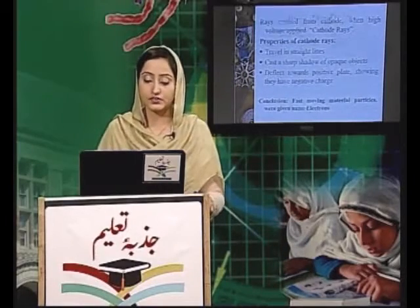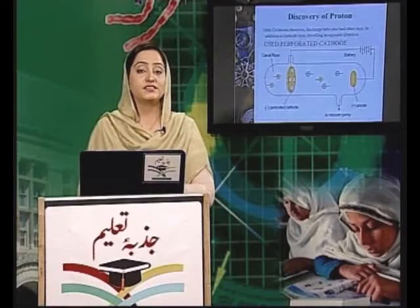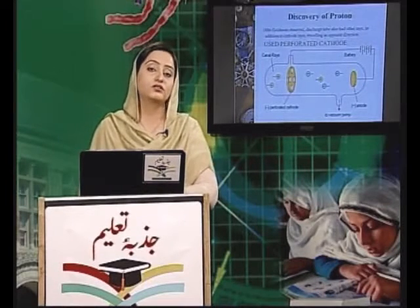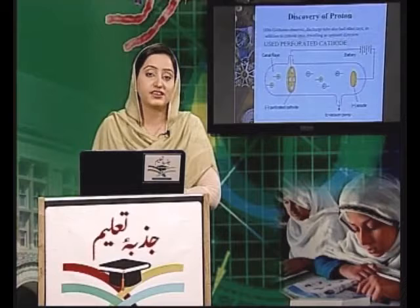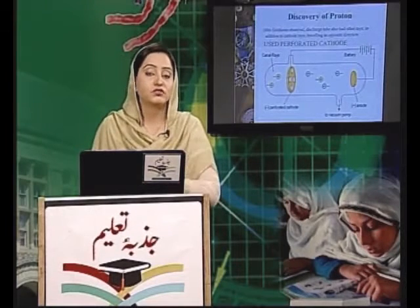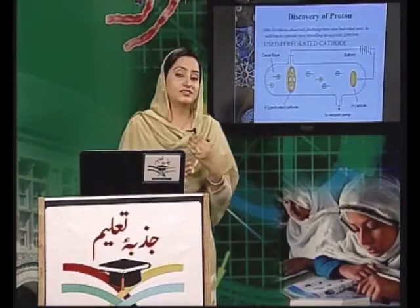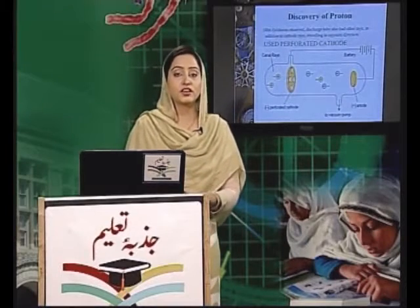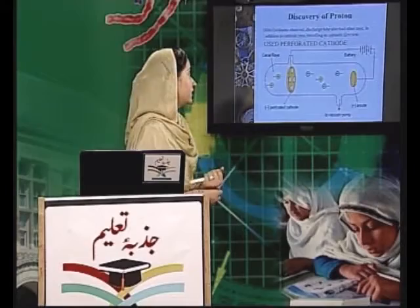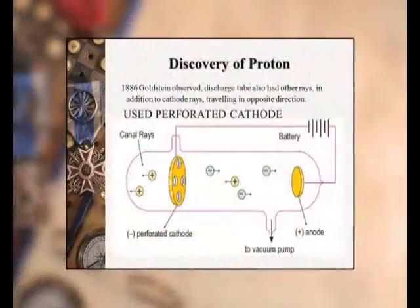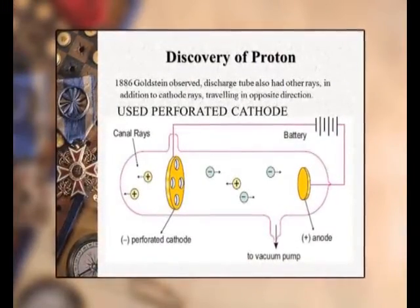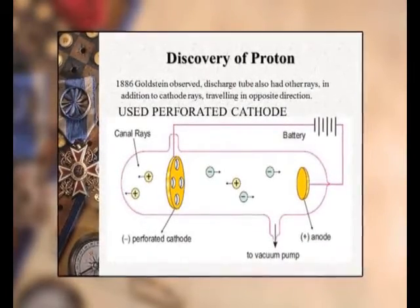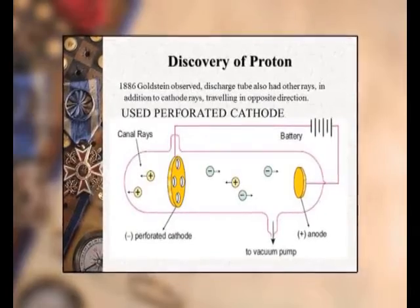इसके बाद बात करते हैं discovery of proton की। Goldstein ने 1886 में Sir William Crookes के ही experiment को जब दोबारा perform किया तो उन्होंने देखा कि सिर्फ cathode rays नहीं हैं बल्कि इसके अंदर कुछ और चीजें भी पाई जाती हैं। और जिस चीज ने उन्हें कामयाबी दी वो था use of perforated cathode। इस apparatus में glass tube के अंदर जो cathode है उसमें सुराख है, इसको perforated cathode कहा और वही cathode, anode plates और battery से connect कर दिया गया।